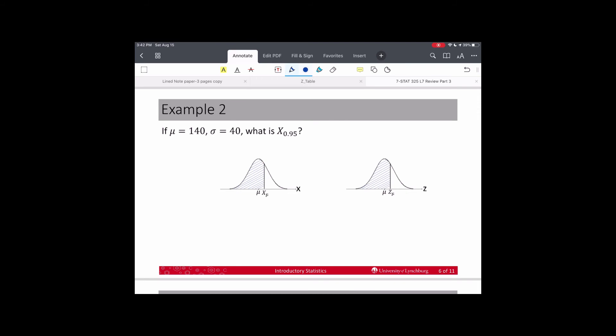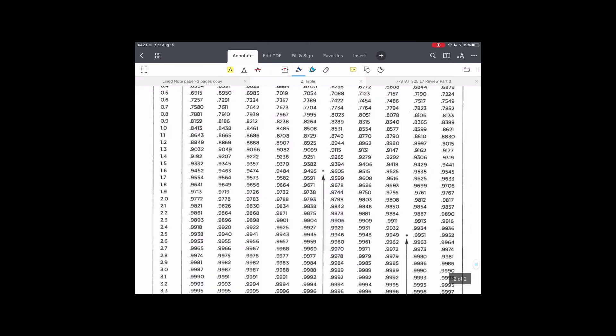In this example, mu is 140, and sigma is 40. So, x is going to be distributed as a normal with 140 as the mean and 40 as the standard deviation. That's how we write it. So we're asking, what is the 95th percentile? So, we want to see that. That means that this p is 0.95. And so, this p is 0.95.